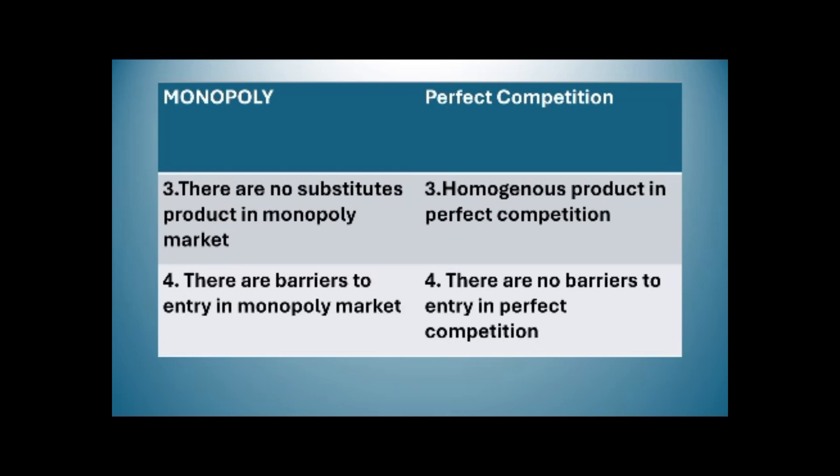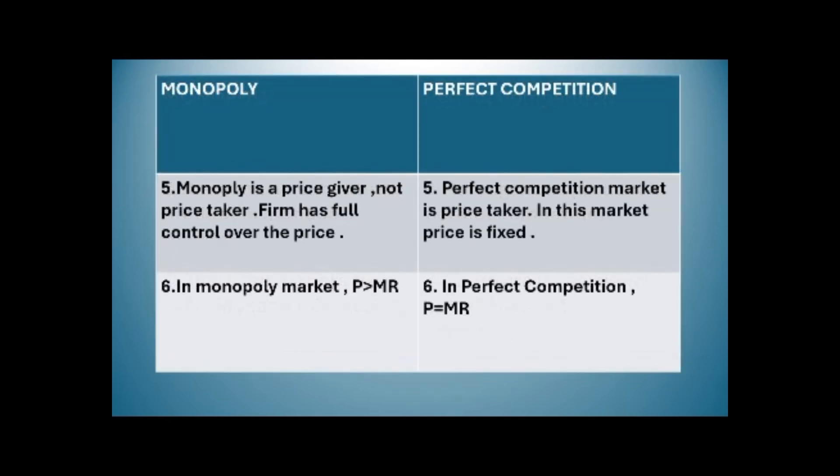Monopoly is a price giver, not a price taker — the firm has full control over the price. In perfect competition, the market is a price taker and the price is fixed. In a monopoly market, price is greater than marginal revenue, whereas in perfect competition price is equal to marginal revenue.